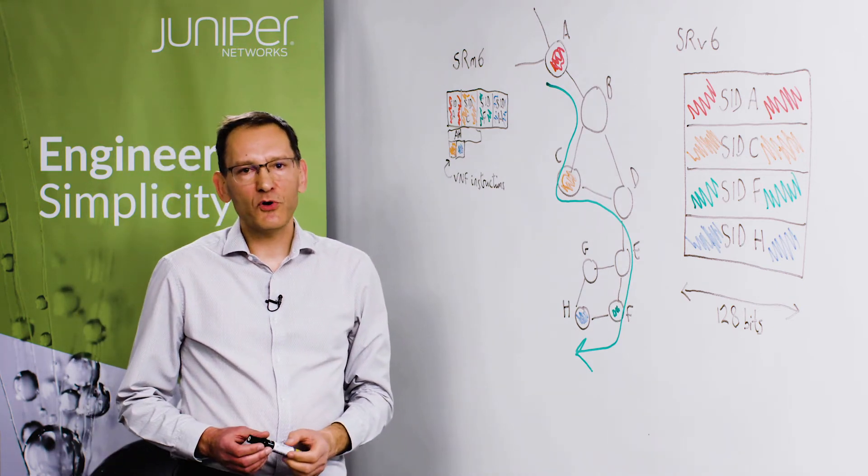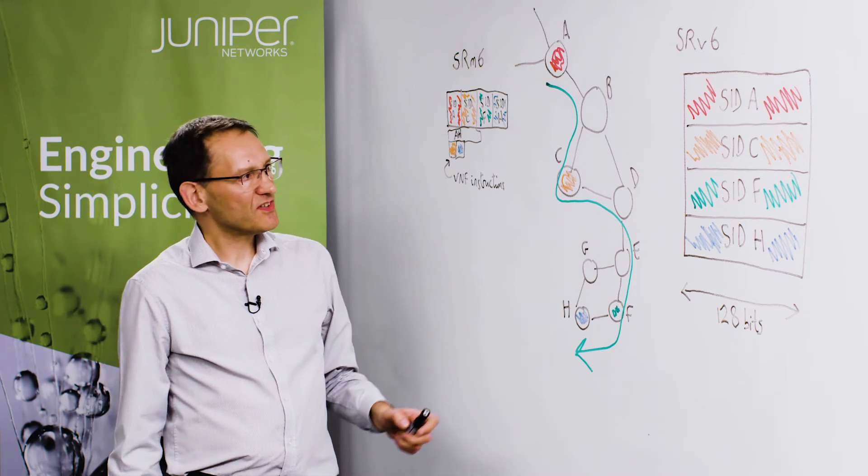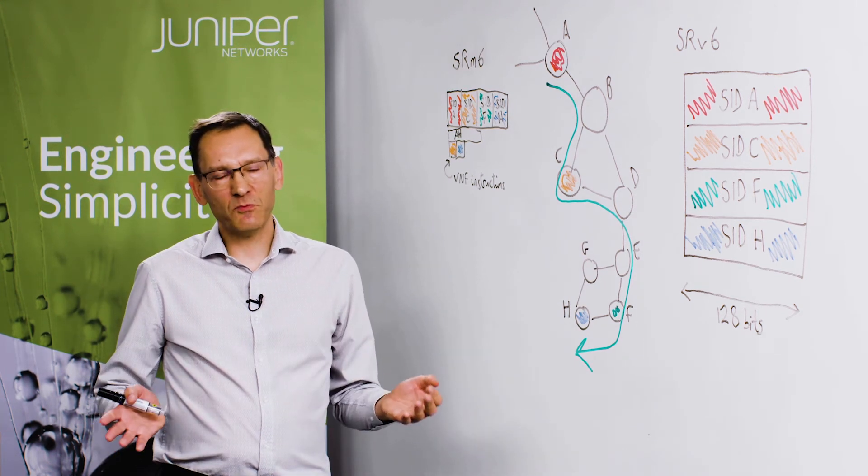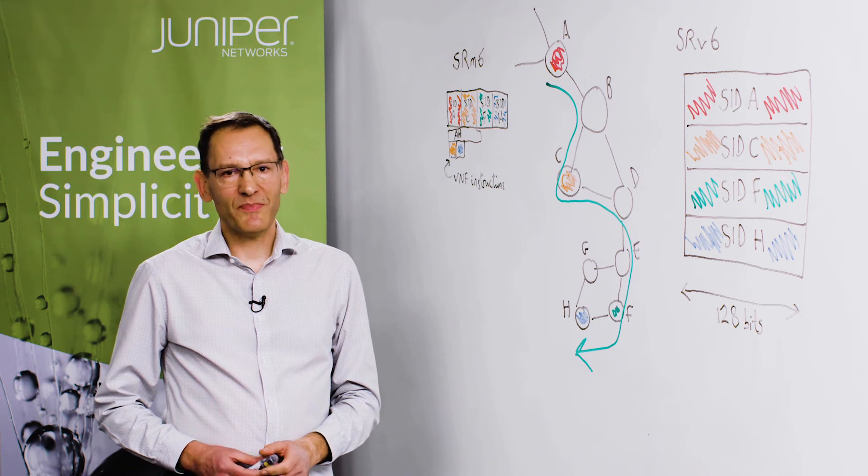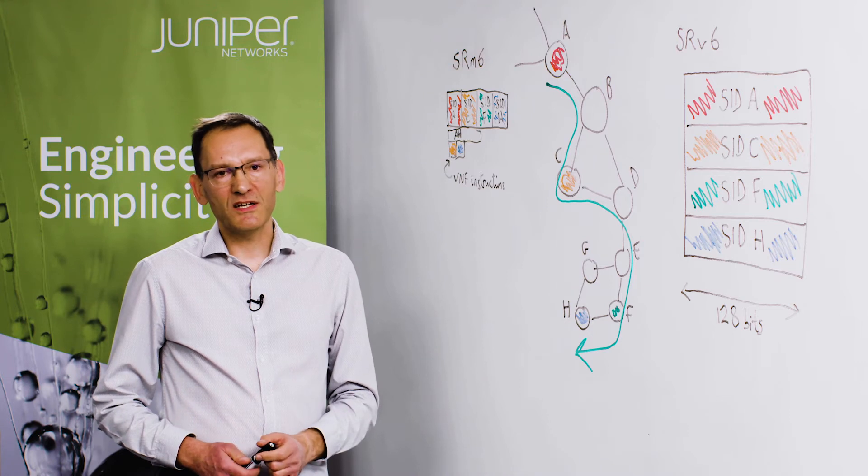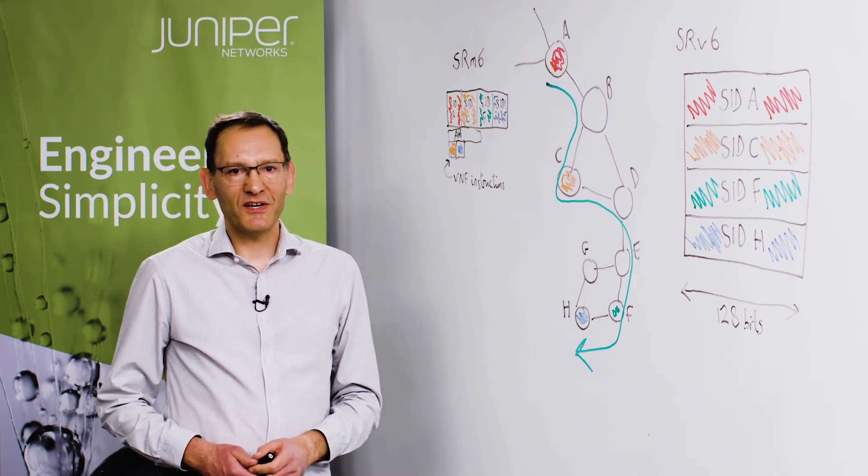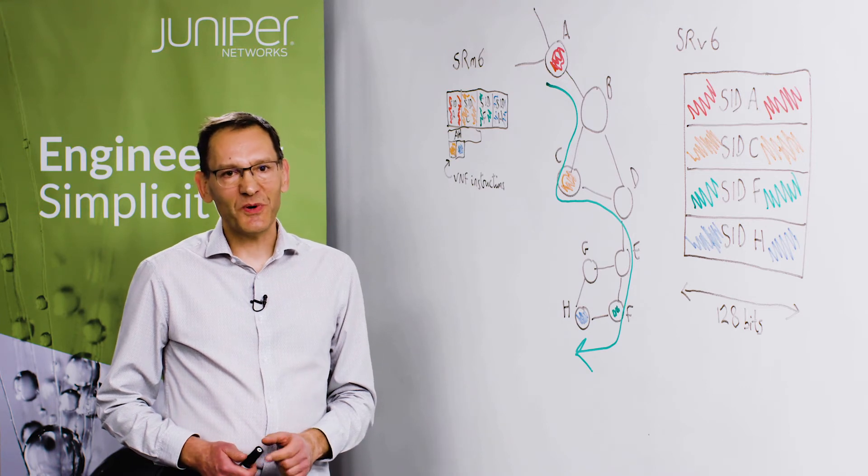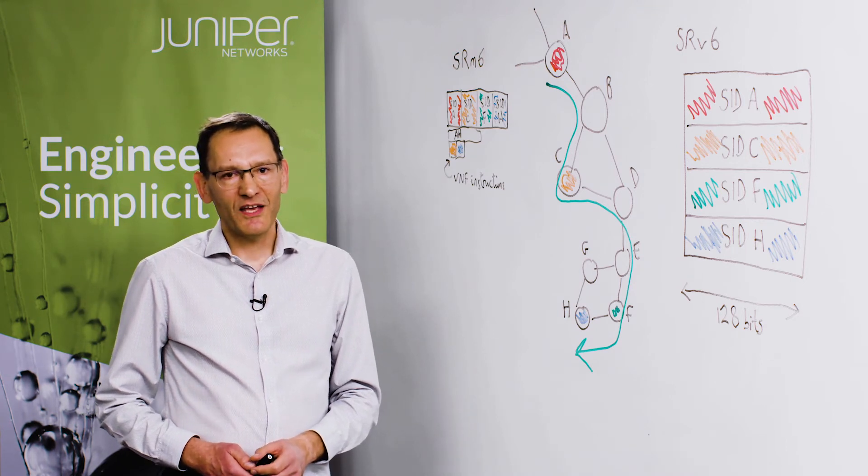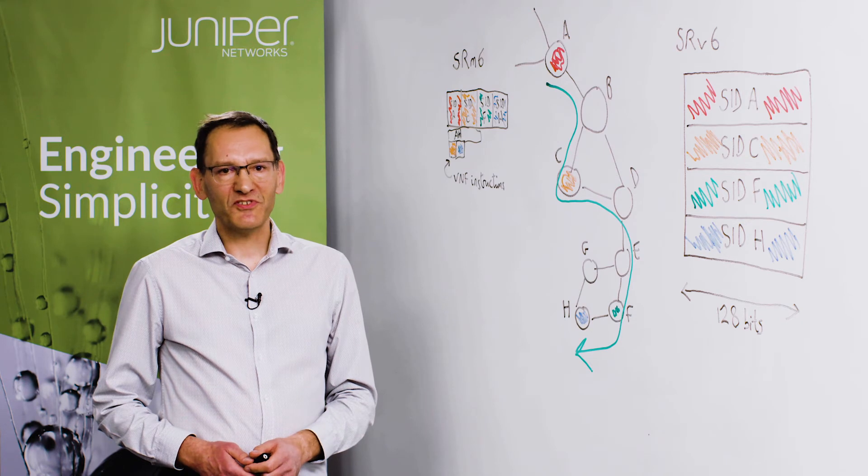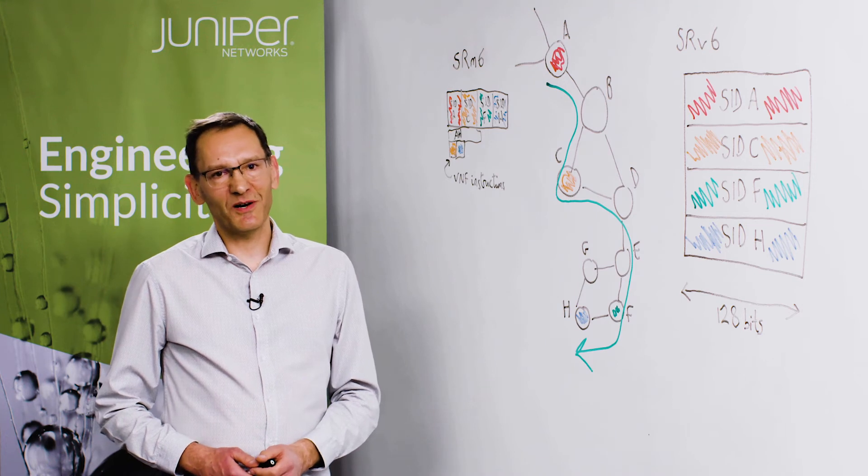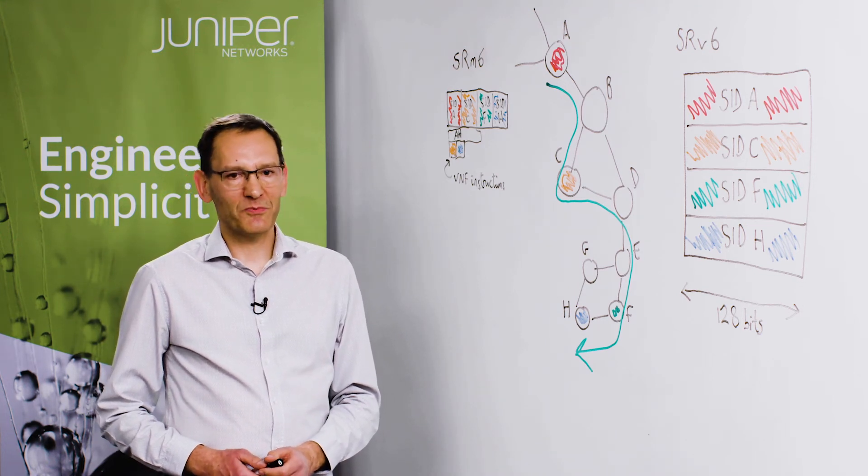Now there are some well-known problems with SRV6. First of all, the SIDs are very large—as you saw, they are 128 bits—and so that gives a very large bandwidth overhead. If you take your typical internet packet size of five or six hundred bytes and if you had eight SIDs in your stack, that would mean an overhead of about 20%. So if you had a 100 gigabit per second link, that means that 20 gigabits per second of that traffic are just pure IP version 6 packet headers. If you think about the days of ATM, people used to complain that ATM had an overhead of 10%, and so SRV6 in my example is twice as bad as that in terms of bandwidth overhead.